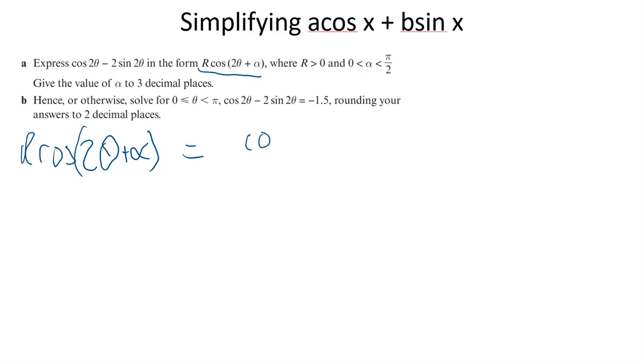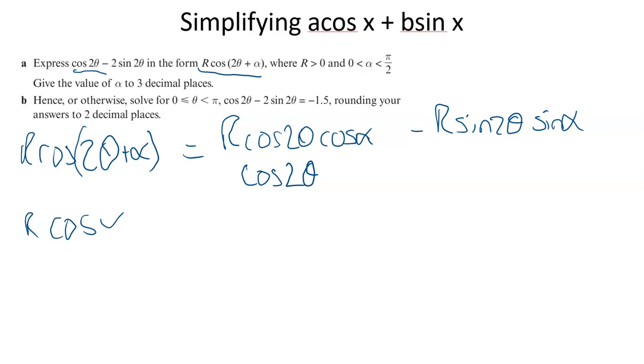Let's expand R*cos(2θ + α). The addition formula gives cos(2θ)*cos(α) minus sin(2θ)*sin(α), with R multiplied through. We've got cos(2θ), which is just 1 times cos(2θ). So R*cos(α) has got to equal 1. And we've got minus 2sin(2θ), so R*sin(α) has to equal 2.